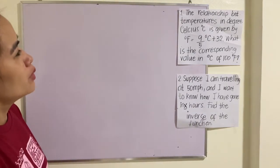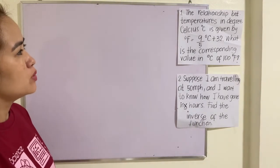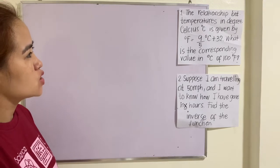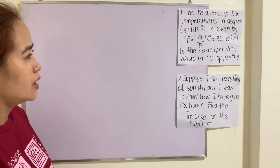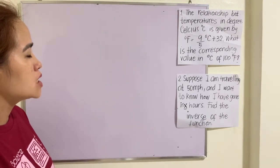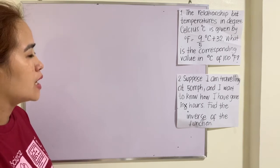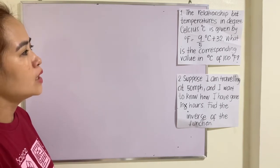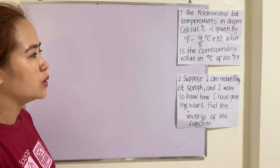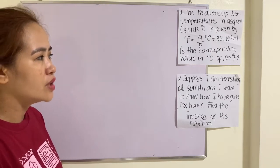Let's take example number 1. The relationship between temperatures in degrees Celsius is given by °F = (9/5)°C + 32. What is the corresponding value in degrees Celsius of 100°F?